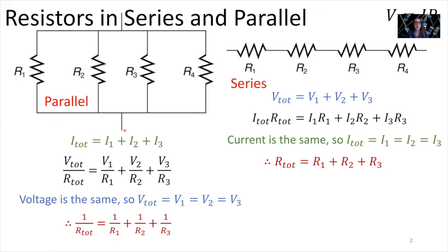Each resistor in parallel receives the same potential as the battery. Since V_total equals V1 equals V2 equals V3, those potentials are all the same and you can factor that out. Therefore you get the relationship: 1 over the total resistance equals 1 over R1 plus 1 over R2 plus 1 over R3, and so on. That's the formula for resistors in parallel.